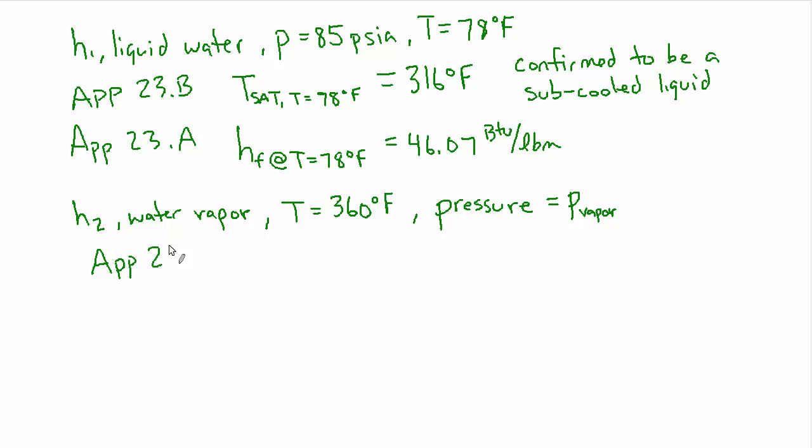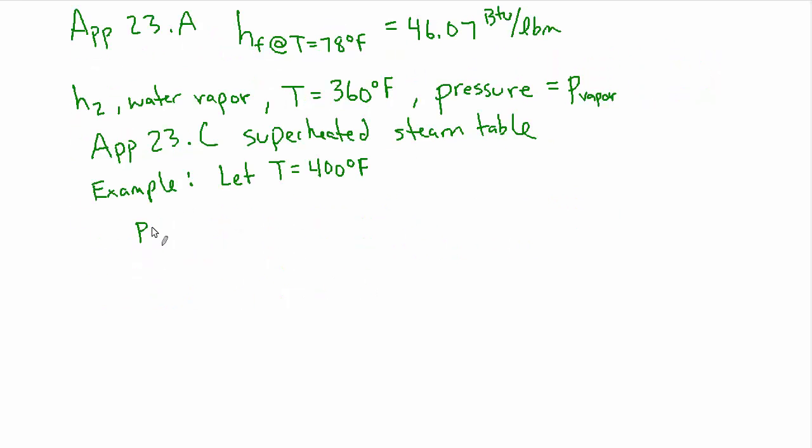But something interesting happens in the superheated steam table. So open up app 23 C superheated steam table. And I'm actually going to write down an example of a few of the things I noticed there. And for this example, I'm just going to look at the 400 degree range. So let temperature equal 400 degrees F. So if you jot down some of the pressures on the left side, it offers one PSI. I'm not going to write the units, but that's PSI 5 PSI 10 PSI 14.7. And now let's look at the corresponding enthalpies for these pressures at that temperature. This one equals 1241.8. The next one is 1241.3. This one is 1240.6. This one is 1240 even. And this one's 1239.3.